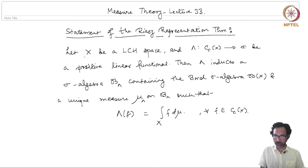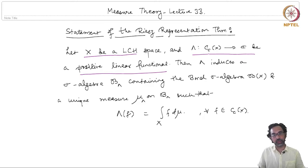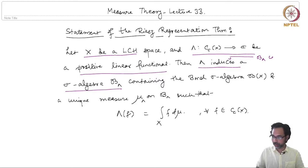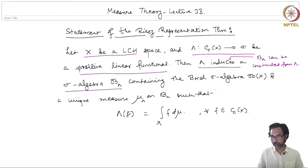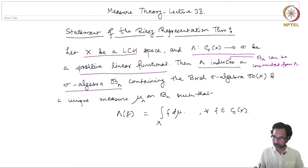Let us look at the statement of the Riesz Representation Theorem. It states that if x is a locally compact Hausdorff space and lambda is a positive linear functional on the space of continuous compactly supported functions on x, then lambda induces a sigma algebra B_lambda. This means B_lambda can be constructed just from the given lambda, and this sigma algebra B_lambda contains the Borel sigma algebra B_x.